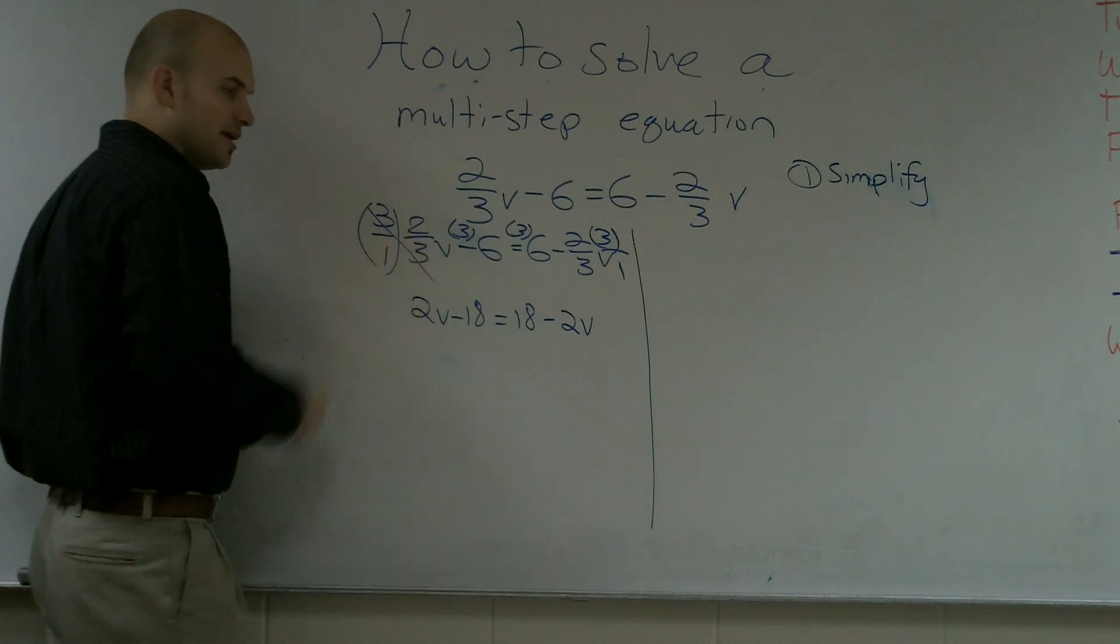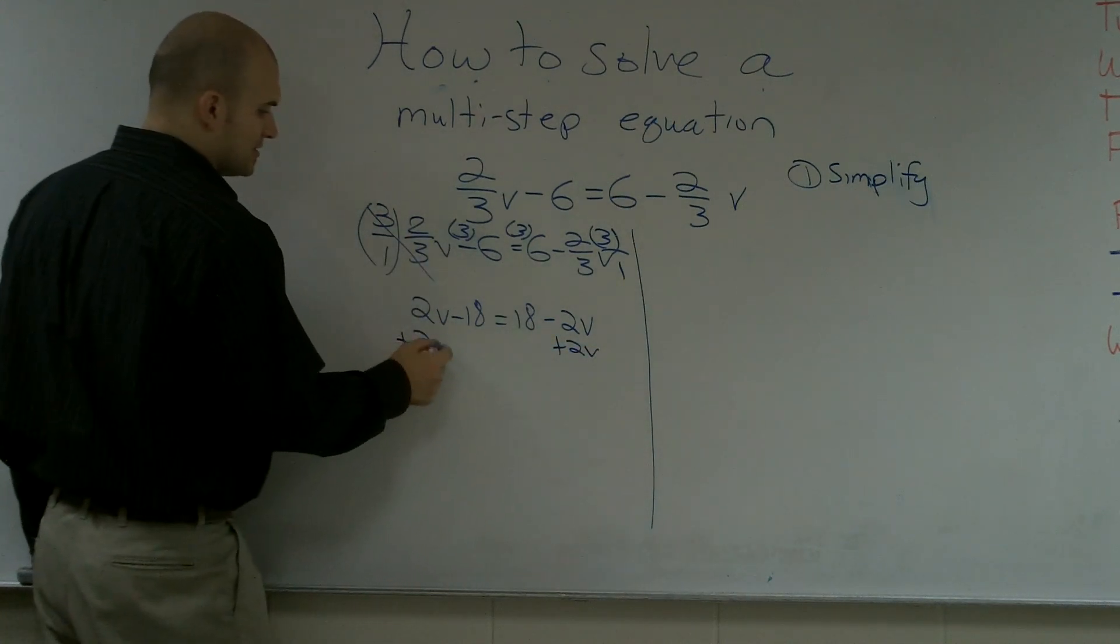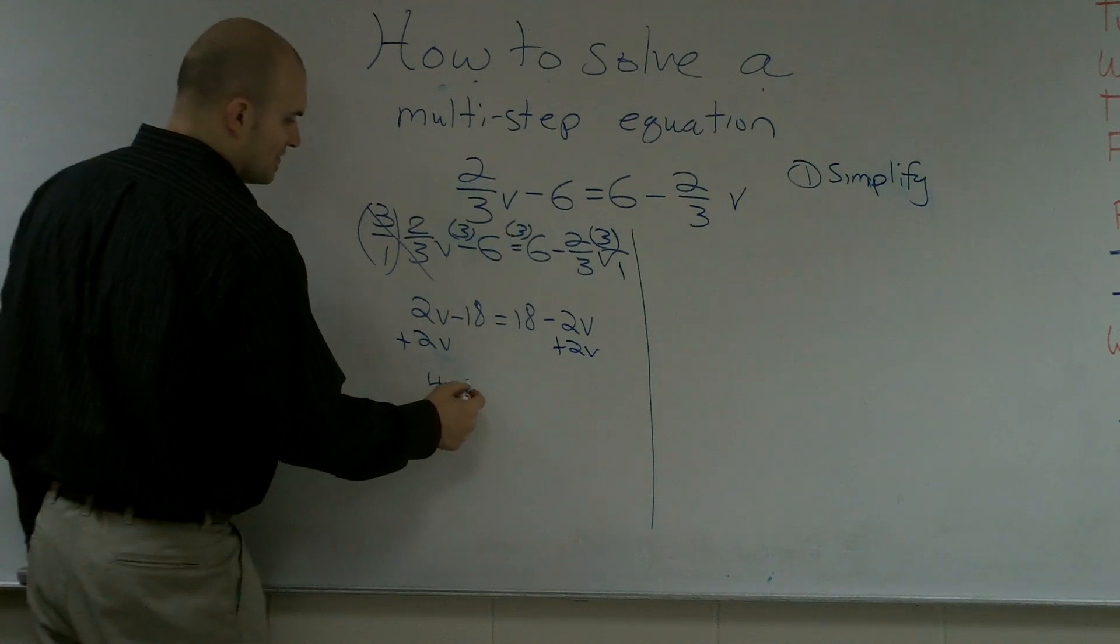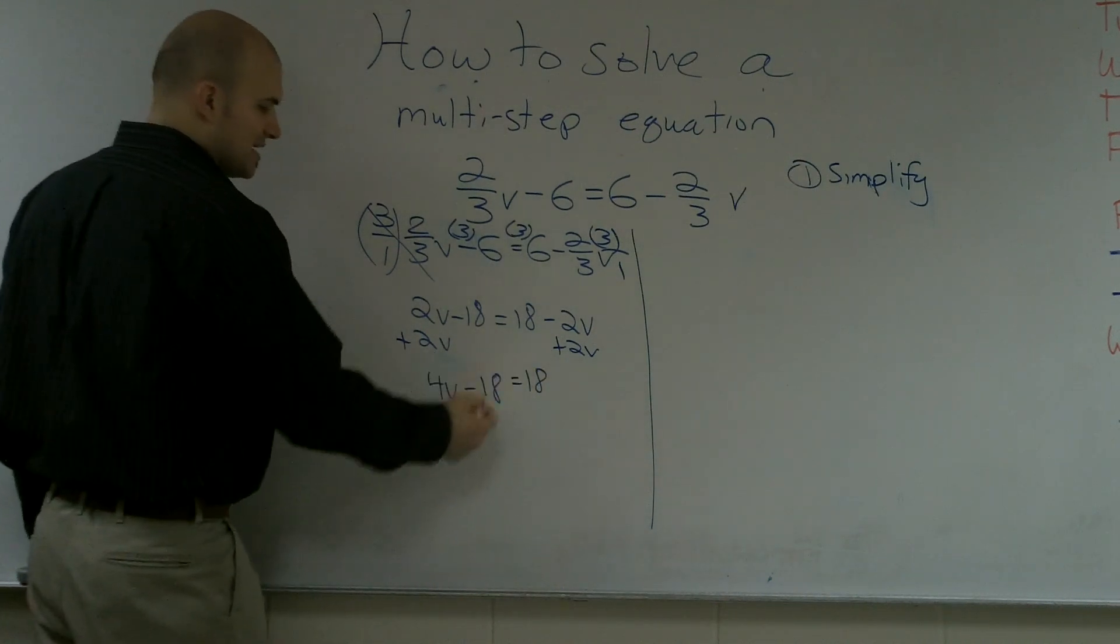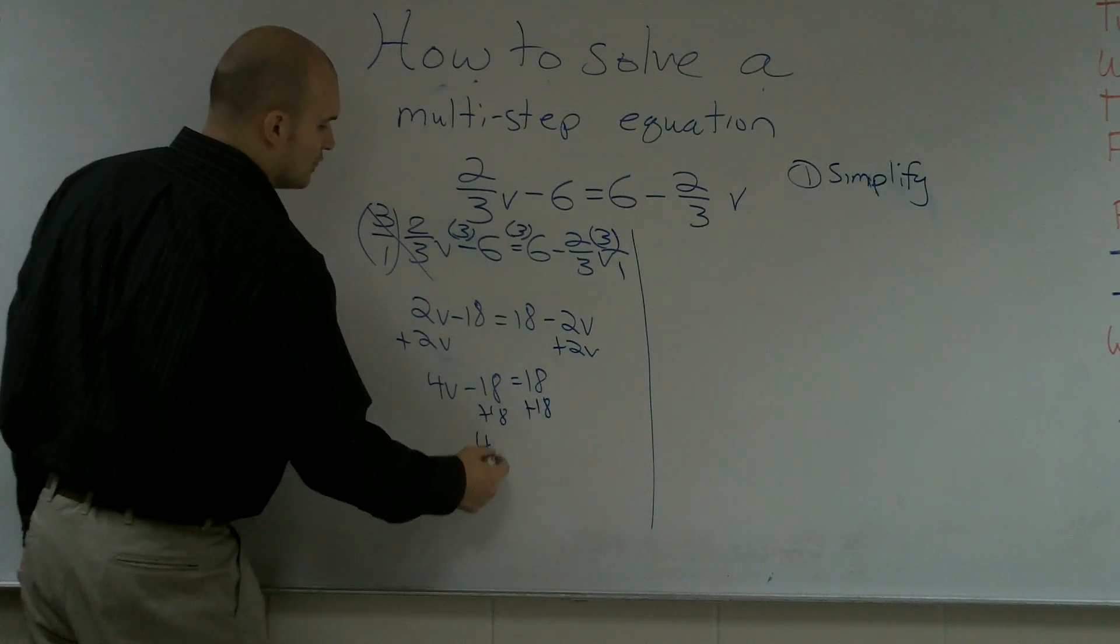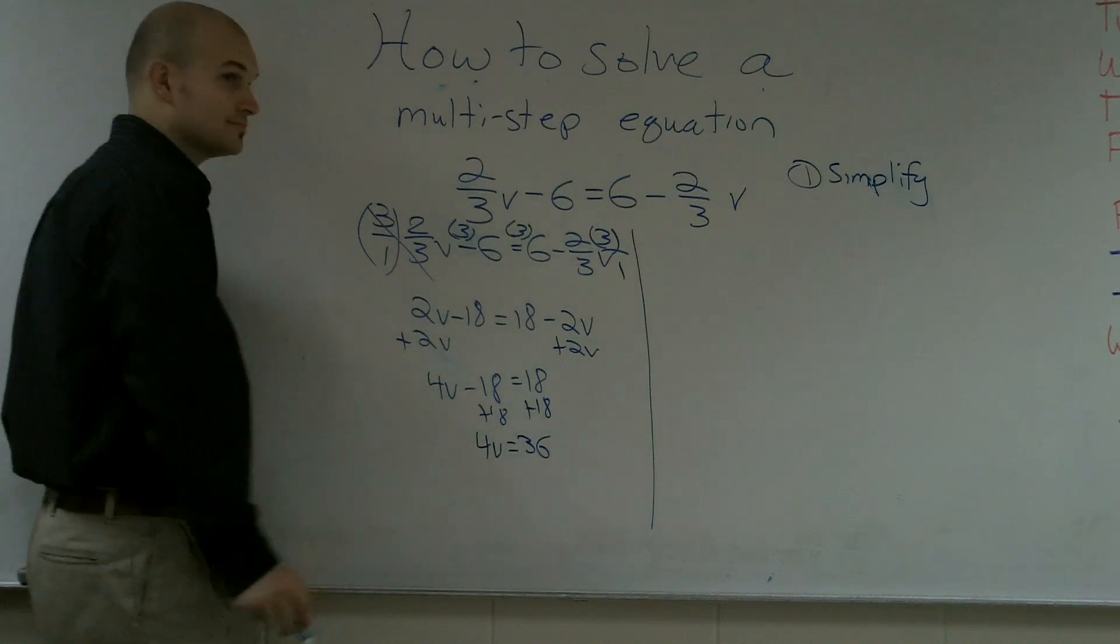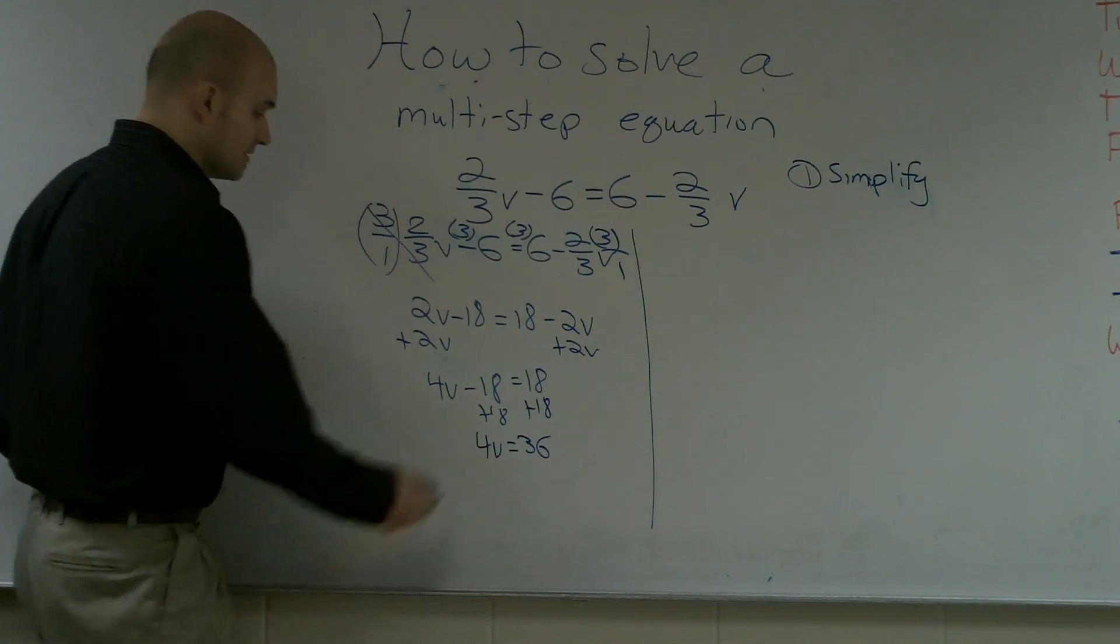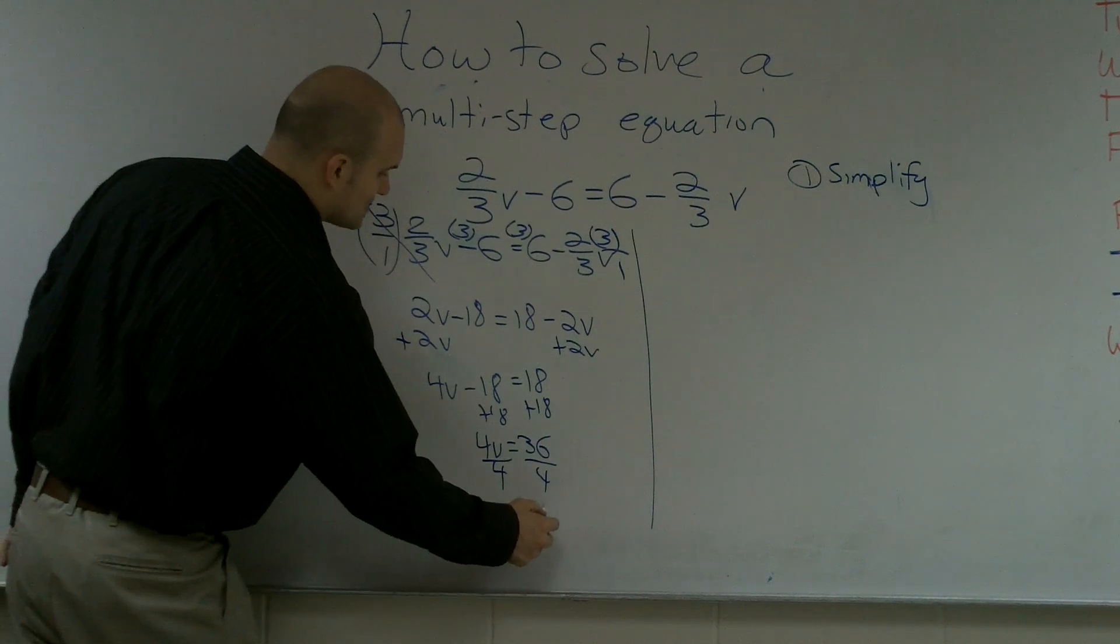Right? Now, I'll get the variable on the same side. Add 2V to both sides. Now, everybody should be able to know what I'm doing here. 4V minus 18 equals 18. Two-step equation. Add 18 to both sides. 4V equals 36. Divide by 4. V equals 9.